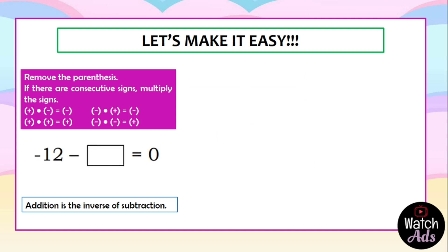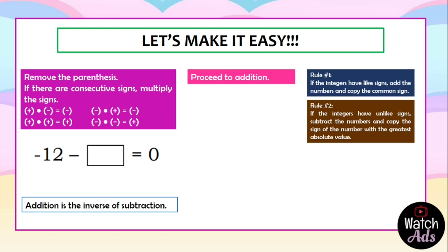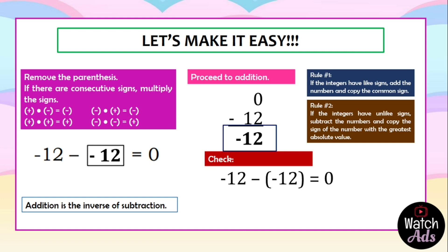What if the subtrahend is missing? Negative 12 minus the subtrahend is equal to 0. Remember, addition is the inverse of subtraction. We proceed to addition — we add 0 and negative 12. The answer is negative 12. Put it in the box, then we check: negative 12 minus negative 12 equals 0. Remove the parenthesis, multiply the two consecutive negatives — they make a positive. Negative 12 plus 12 equals 0 — they cancel out. 0 equals 0, therefore our answer is correct.